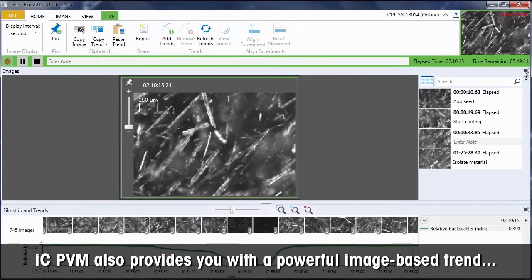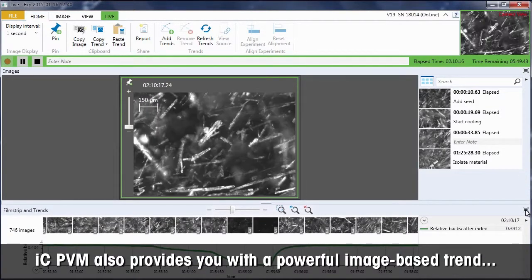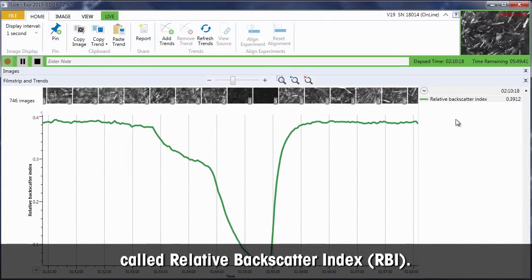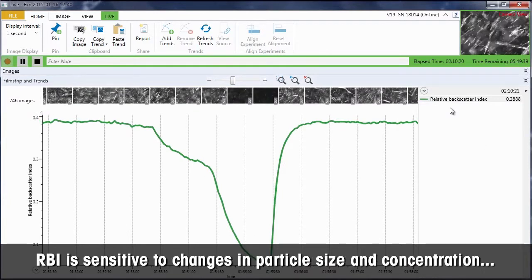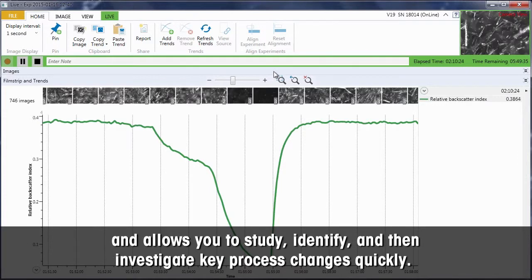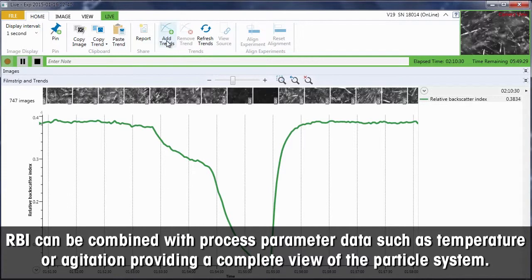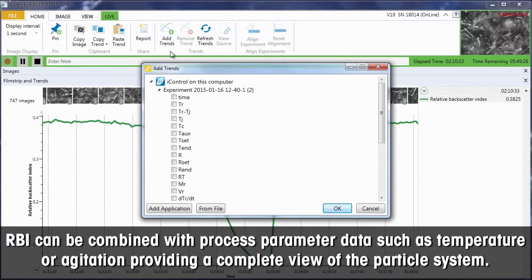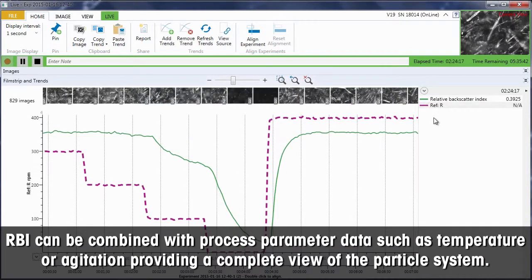ICPVM also provides you with a powerful image-based trend called Relative Backscatter Index (RBI). RBI is sensitive to changes in particle size and concentration and allows you to study, identify, and investigate key process changes quickly. RBI can be combined with process parameter data such as temperature or agitation, providing a complete view of the particle system.